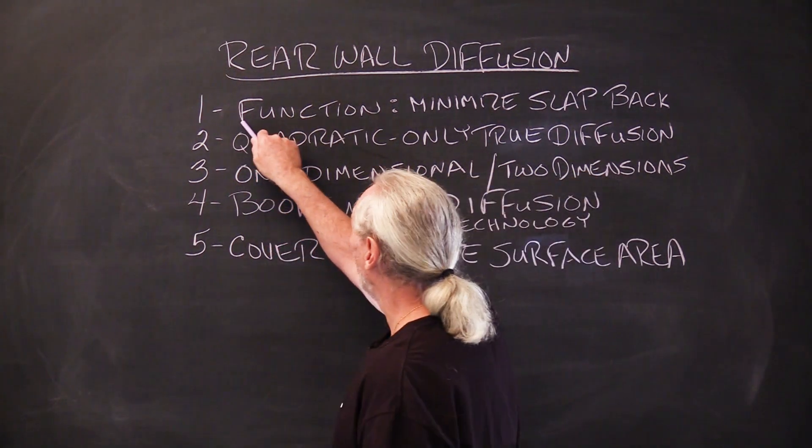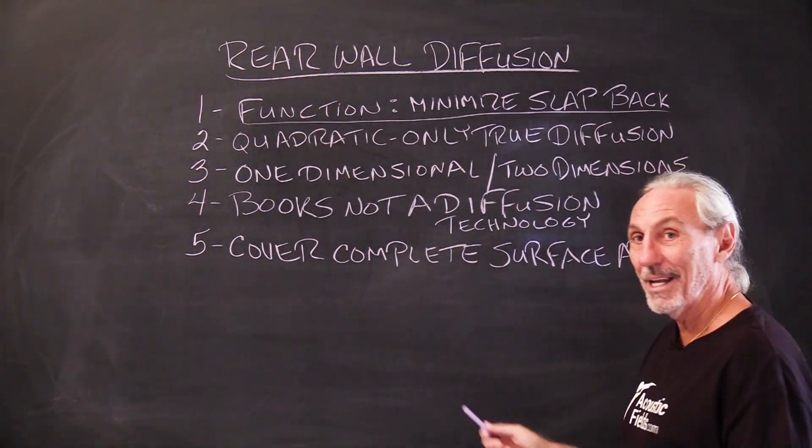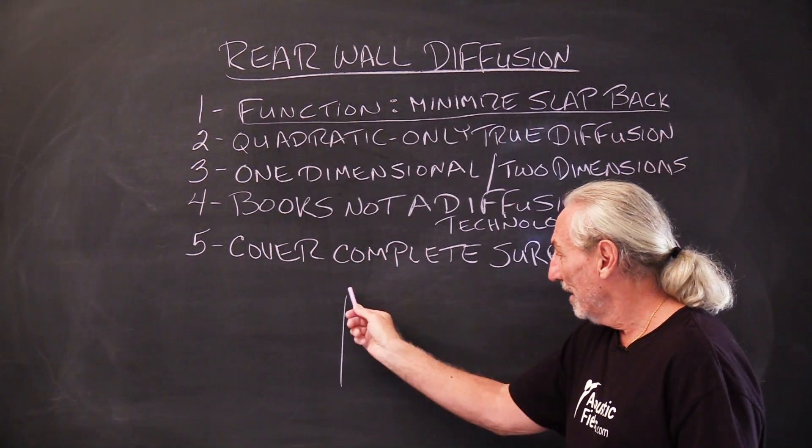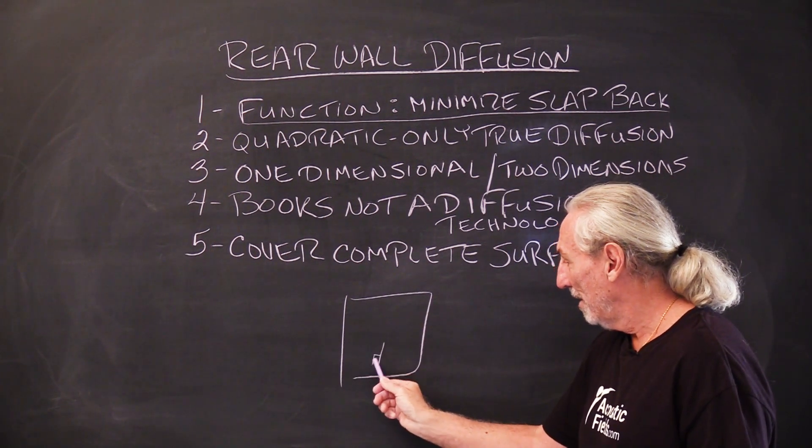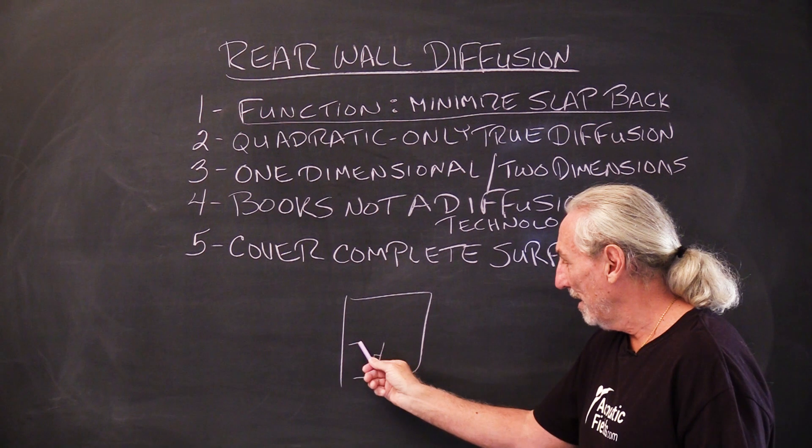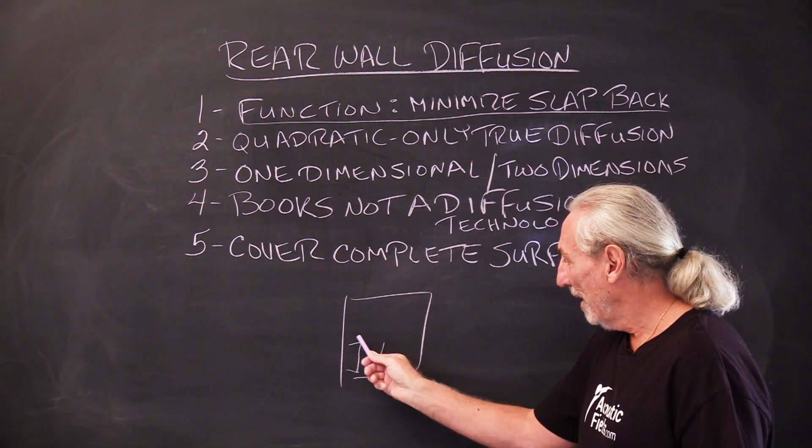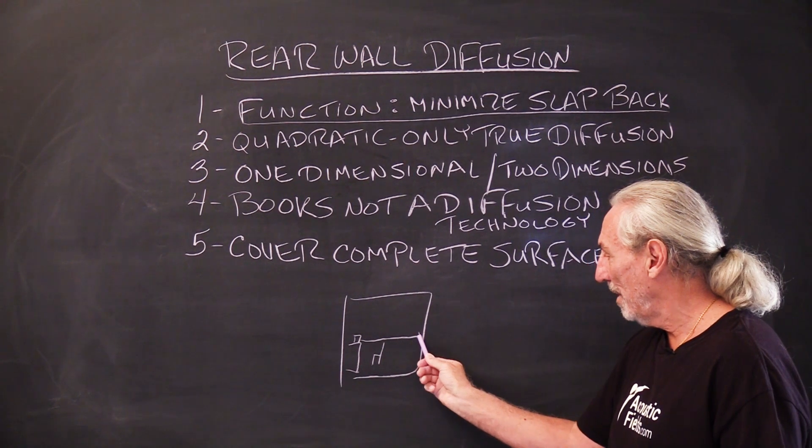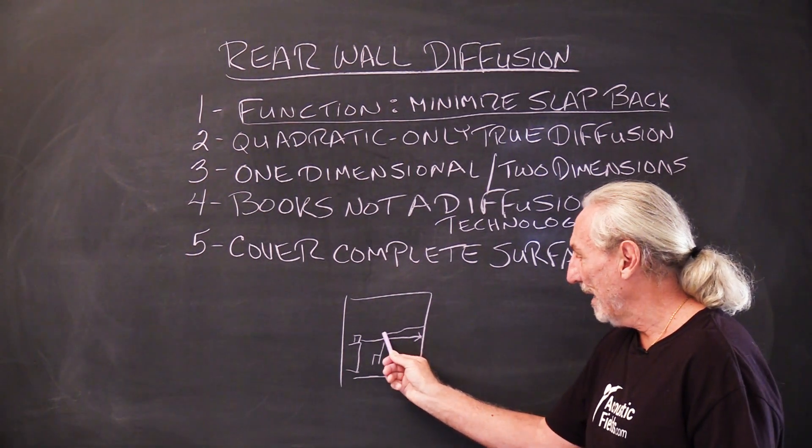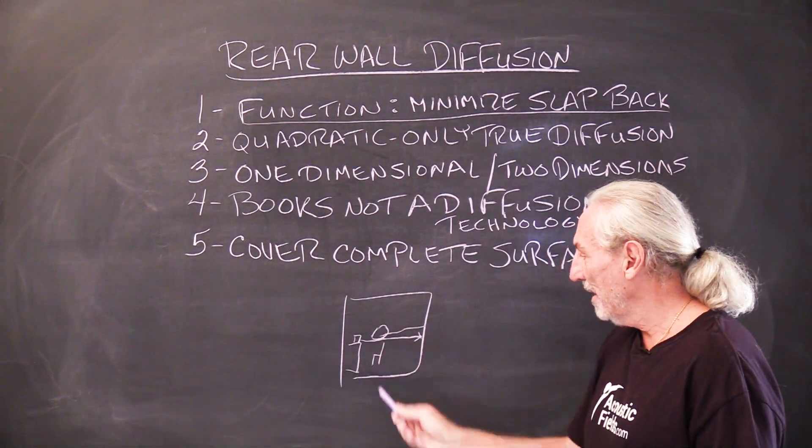So what's the function of Rear Wall Diffusion? Well, it's to minimize that slap back. Because if we have our console here and we're mixing and we get our speakers producing energy and it strikes that rear wall and then it comes back and strikes our ears...